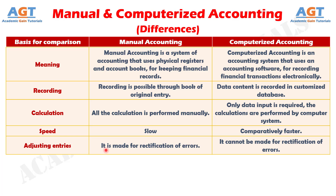Number 5. In manual accounting, if there occurs an error while entering and posting the transaction in the books of accounts, then adjustment entries can be passed for getting accurate results. Moreover, adjustment entries are also made to comply with the matching principle, that is, the expenses of the accounting period should match the respective revenues. On the other hand, in computerized accounting, to comply with the matching principle, journals and vouchers are prepared, but adjustment entries are not passed for rectification of error unless the error is an error of principle.